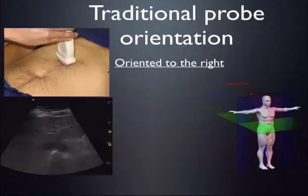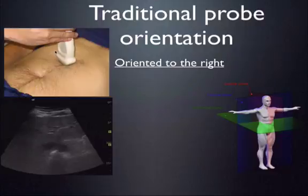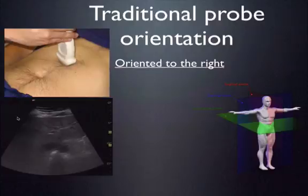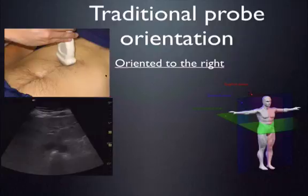In a transverse axis view, the probe indicator points to the patient's right. The corresponding image shows the GE marker on the left side of the screen. Because the probe indicator points to the patient's right, the left side of the screen correlates with the patient's right side, and the right side of the screen correlates with the patient's left side. Looking at two vessels with the spine visible, we're in a transverse plane viewing from the feet toward the head.